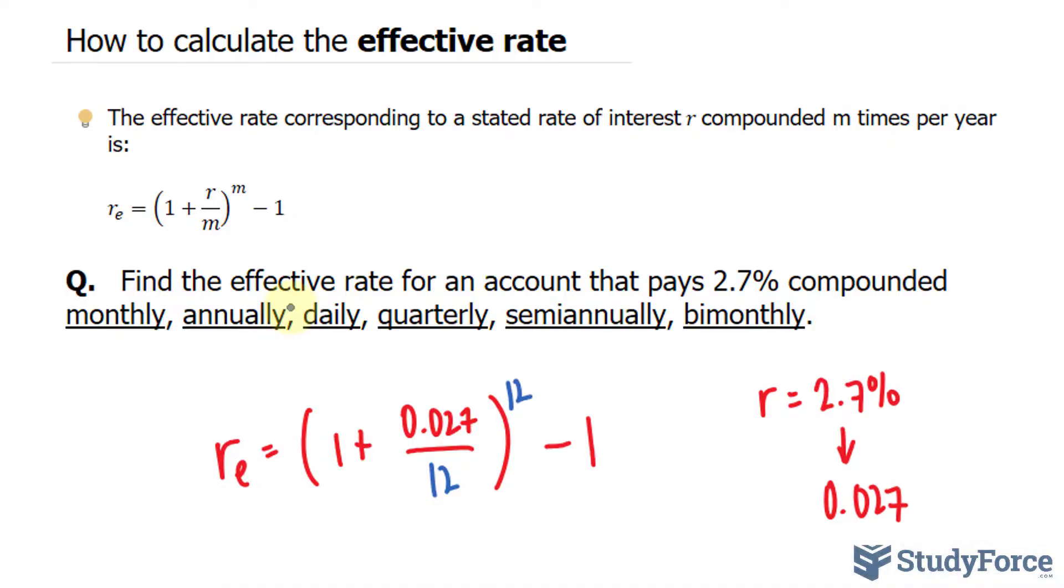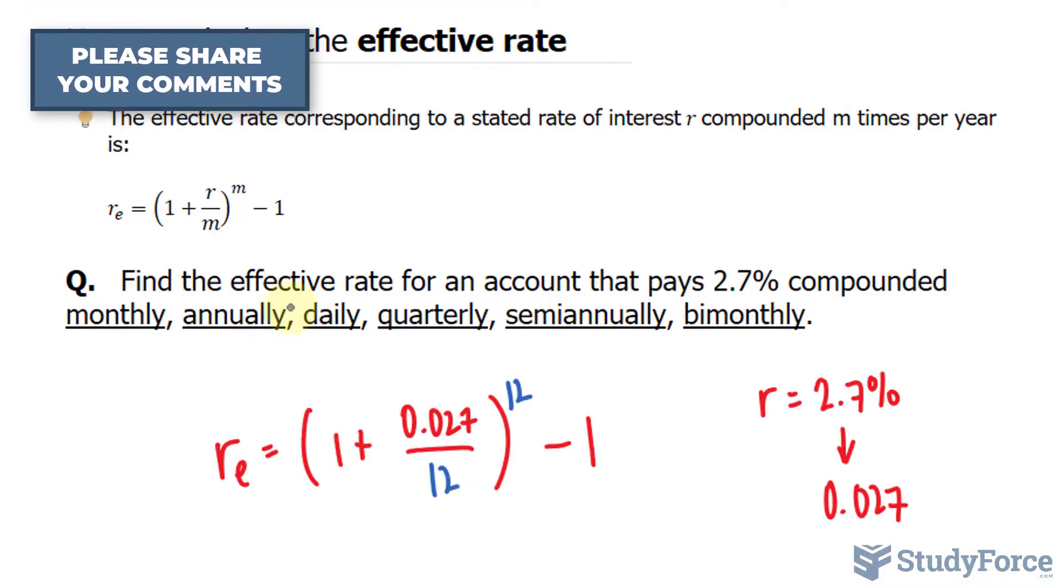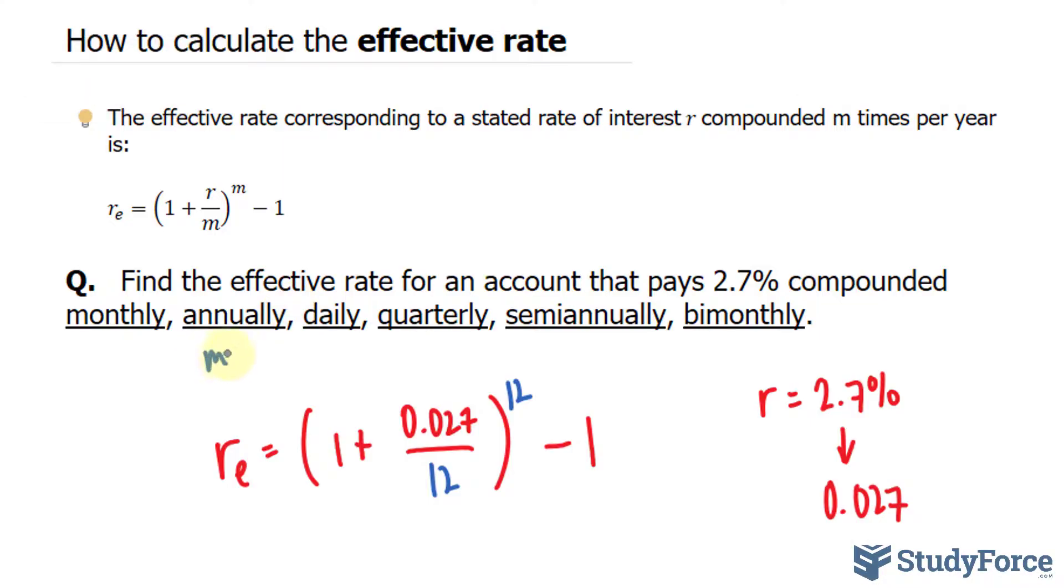For annually, m will be 1. As a result, you should expect your effective rate and your nominal rate to be the exact same. So both will come out as 2.7. So here, m is equal to 1. For daily, we divide R by 365.